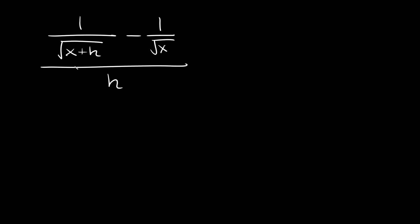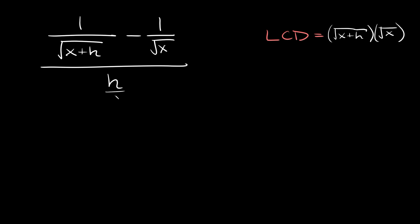Here's the last problem: we have 1 over the square root of x plus h, minus 1 over the square root of x, all over just h. First thing we want to do is find the LCD, which equals all different denominators multiplied together. We have the square root of x plus h and the square root of x as denominators — the bottom h term can be put over 1. So the LCD is simply the square root of x plus h times the square root of x.